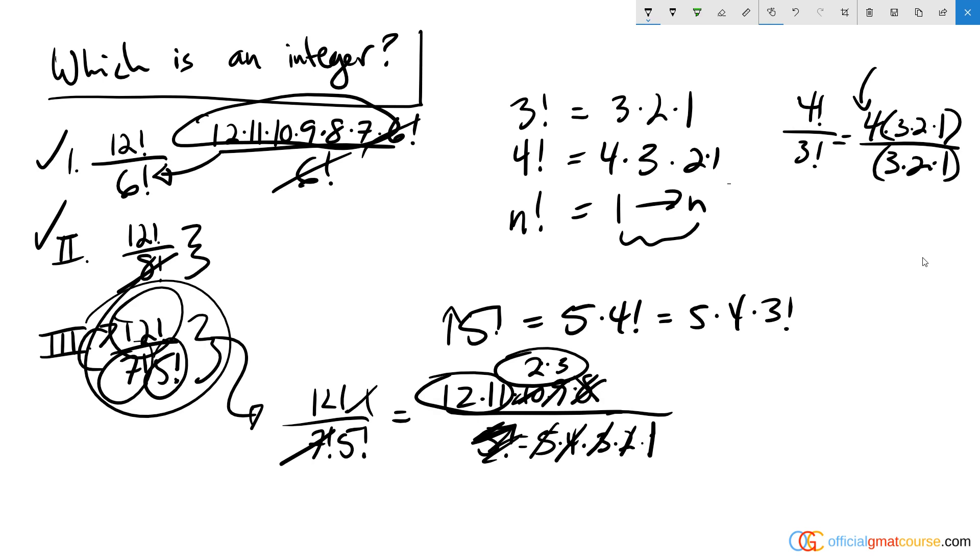And I'm left with 12 times 11 times 2 times 3 on top, and that definitely is going to give a whole number out. And so this one also gives us an integer when we cancel the top and the bottom. All three of these are integers, so that means that answer choice E is correct.